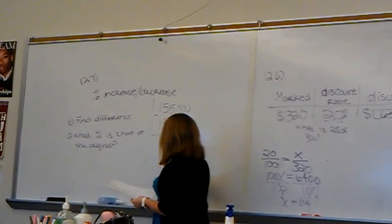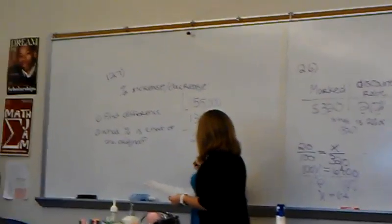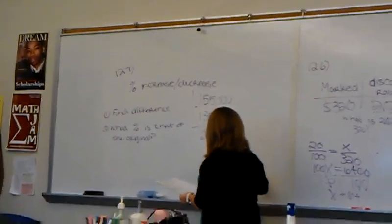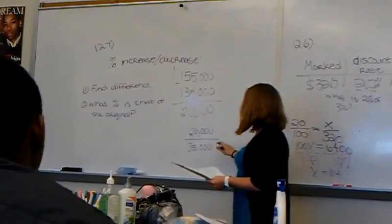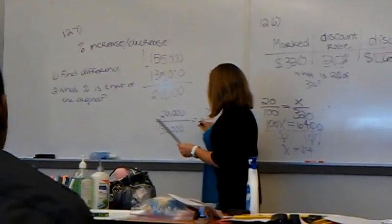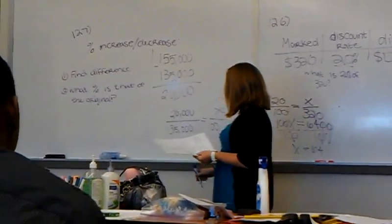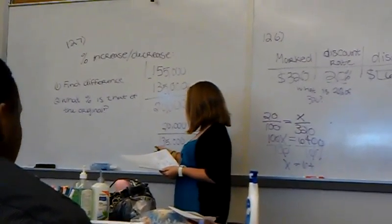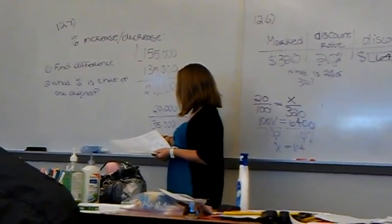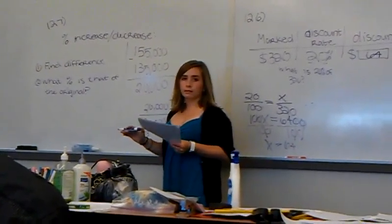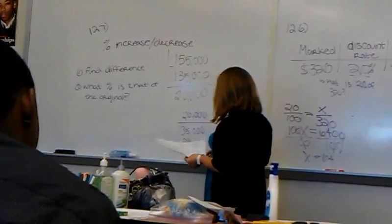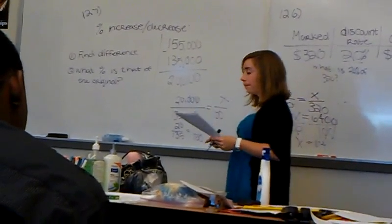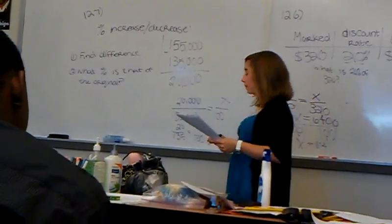Okay. So now you have to find what percent of 135,000, because that's the original, is 20,000. So for me, I would set up a proportion: 20,000, because that's the part, over 135,000, because that's the whole of the original from last year. What percent, right? Cross multiply 135,000 times x.